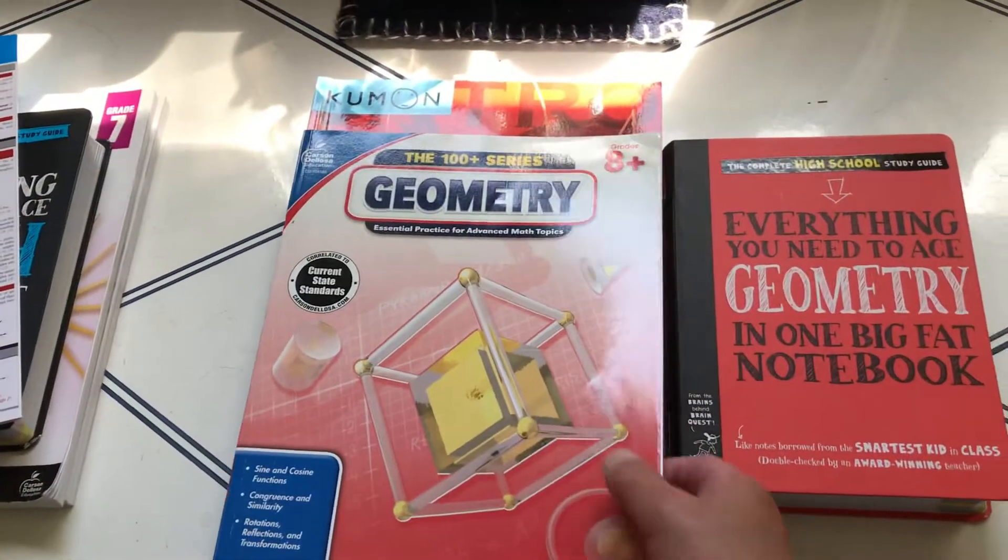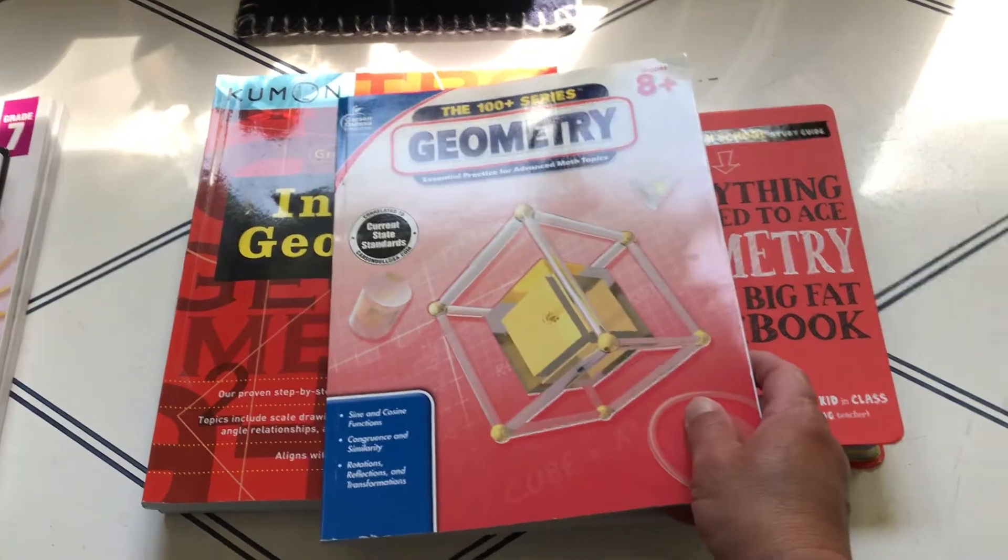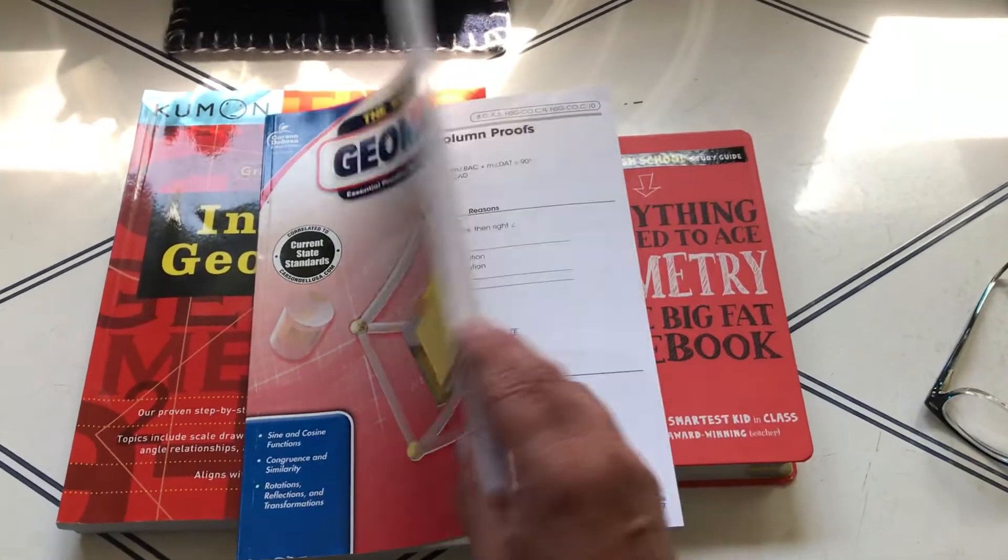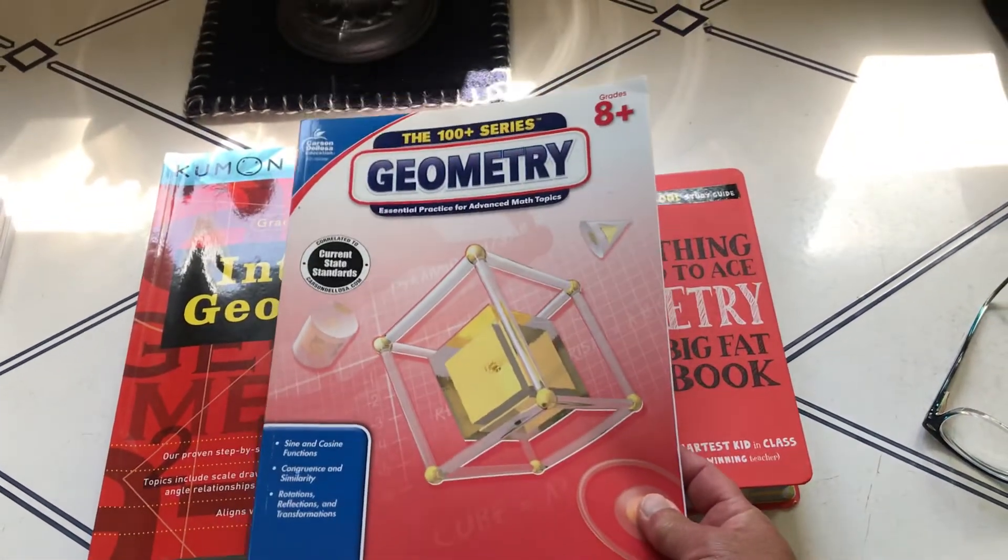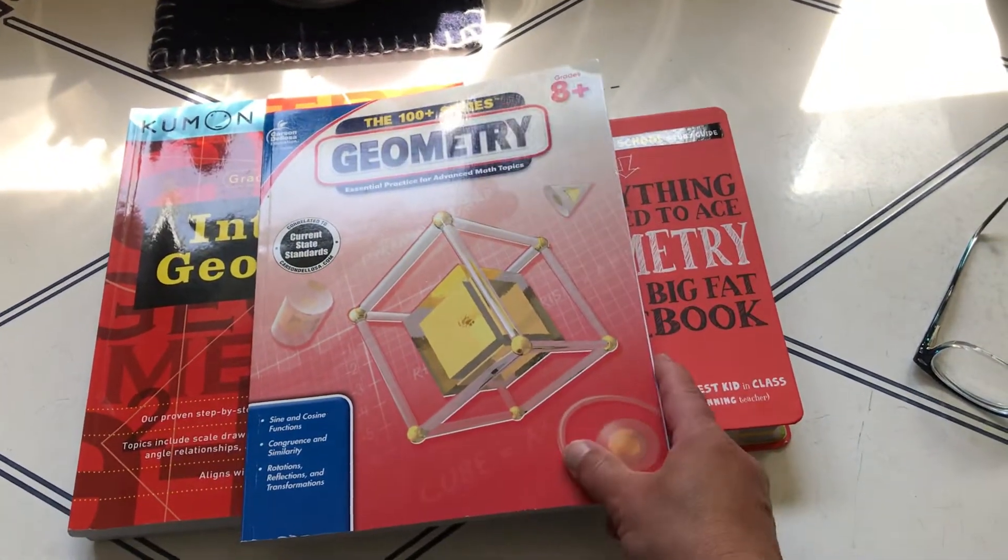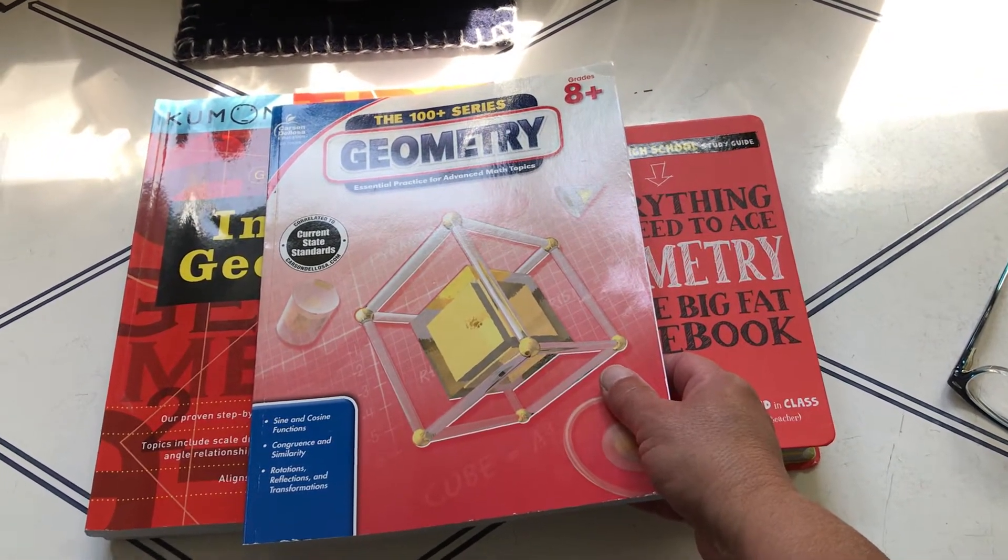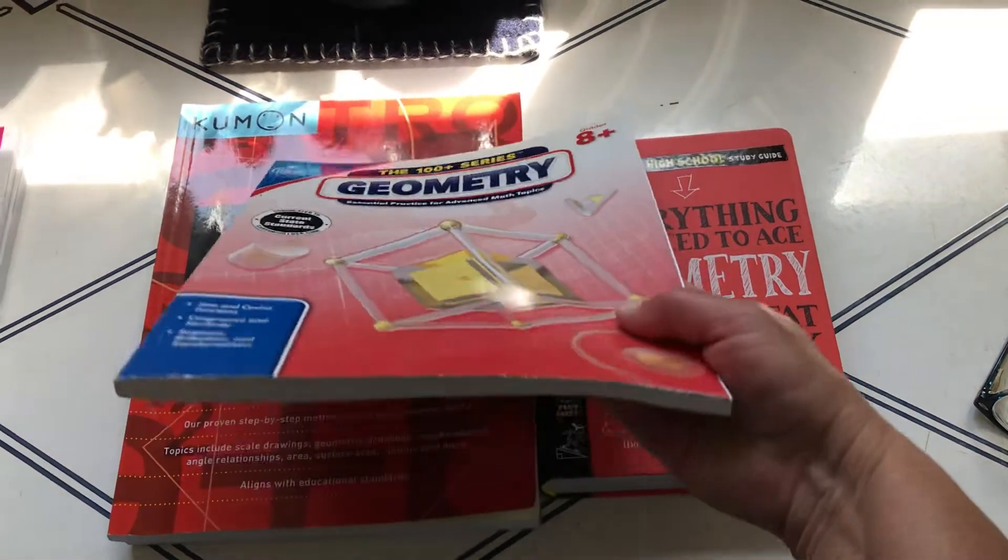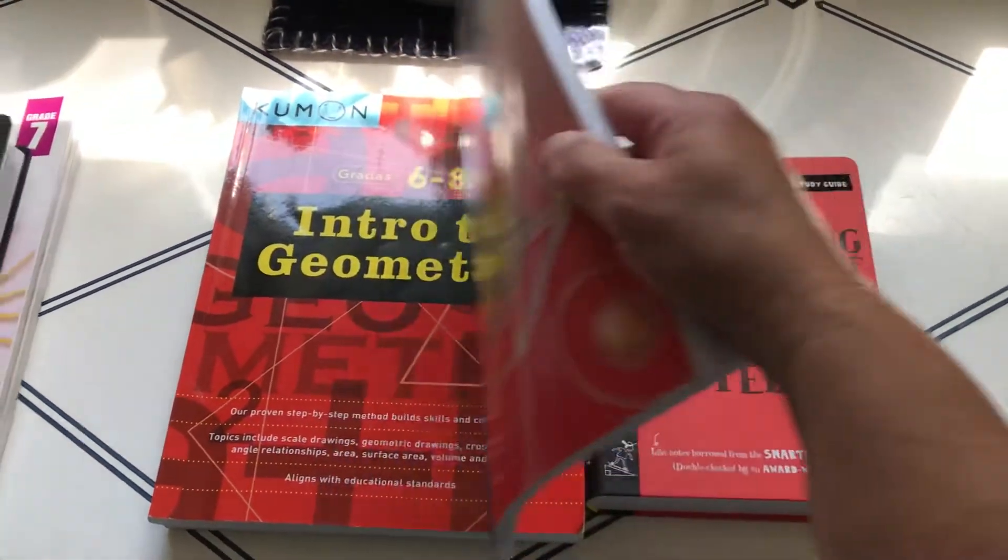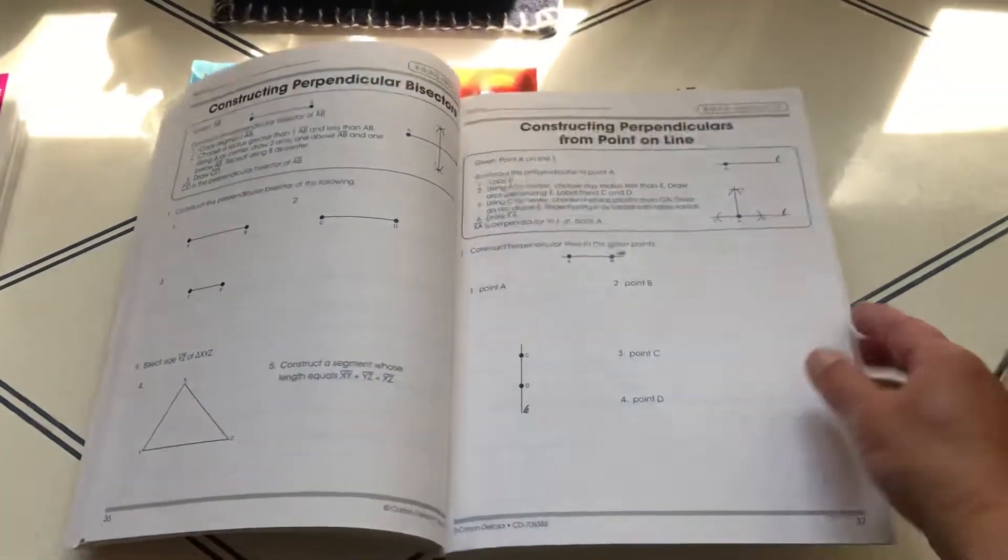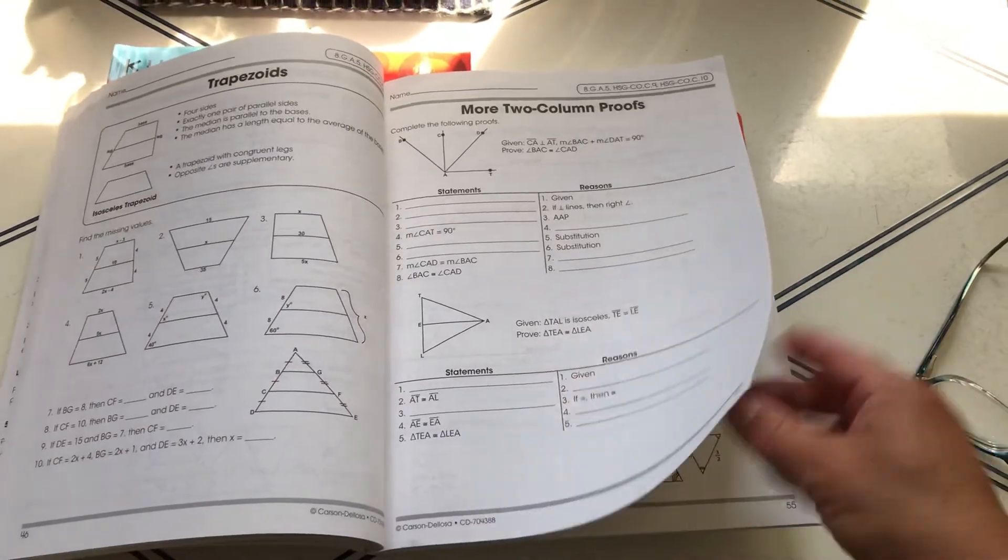At first I had looked online and I was looking for a Spectrum Geometry high school level, and I picked this up at a United Art Education. It says grades 8 plus and I thought to myself it looks pretty skinny, and I started flipping through it.